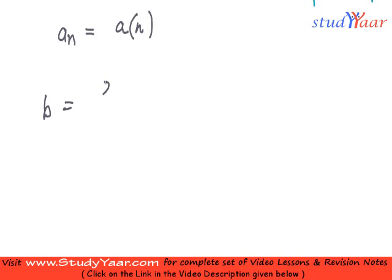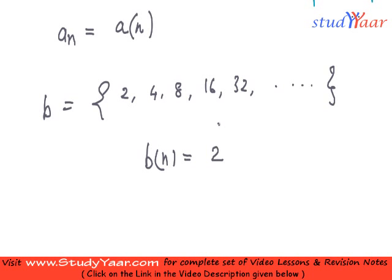It is like this: 2, 4, 8, 16, 32 and so on. So basically it is simply a function which is like this, what is b, b of n is basically 2 raised to n.